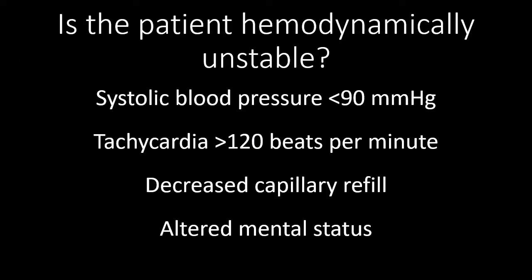Basic criteria for determining whether a patient is hemodynamically stable or unstable would include their blood pressure, their heart rate, whether you can detect any capillary refill, and whether or not they have altered mental status. These are four quick and easy ways to assess for hemodynamic stability. Patients who are unstable should be resuscitated. If resuscitation does not result in stability, they will often need to be operatively managed. If resuscitation results in stability, you can often proceed to diagnostic imaging.